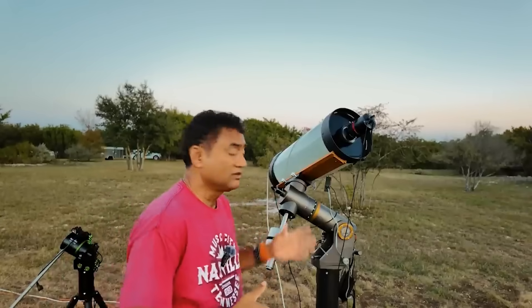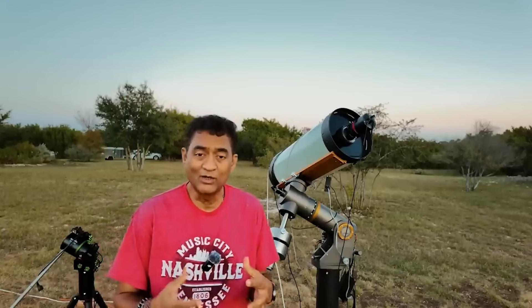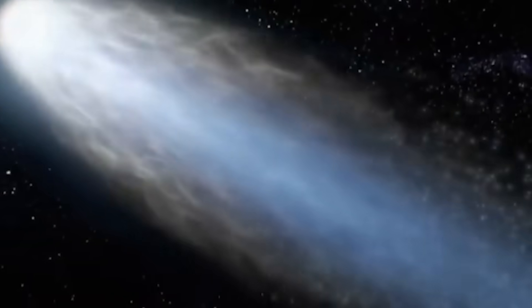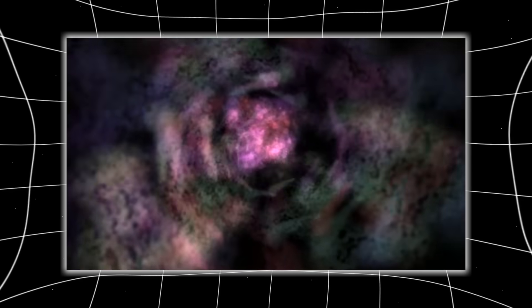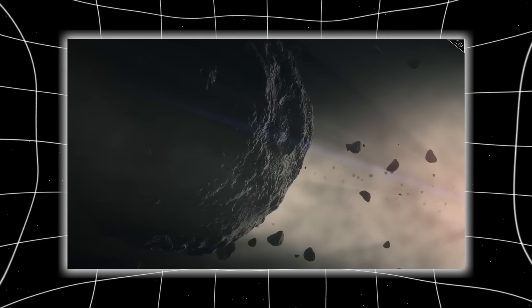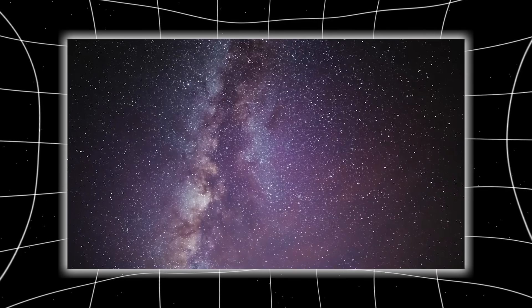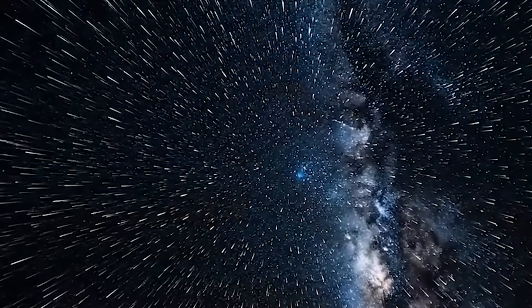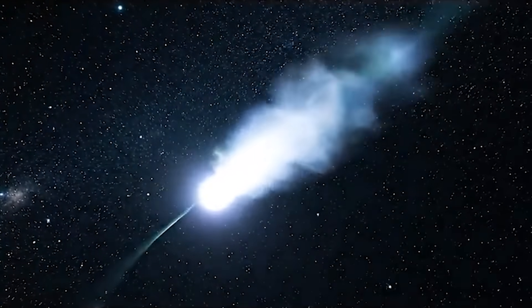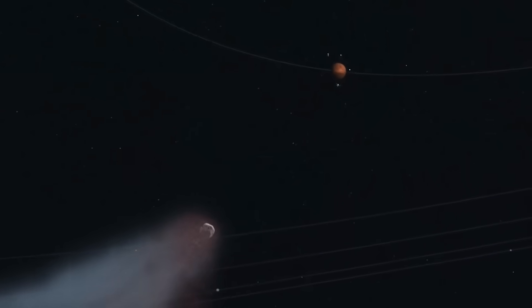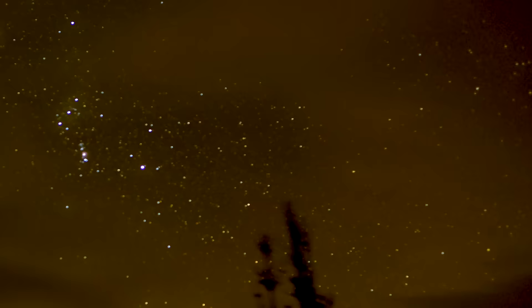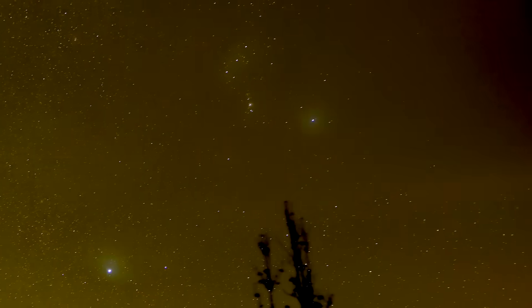As Ray continues capturing the comet night after night, something subtle yet profound begins to emerge in his data, because the closer 3i Atlas gets to Earth, the more pronounced its internal structure becomes through the glow of its coma, almost as if the comet were gradually peeling back its own layers for us to study. Ray mentions that what initially looked like a diffuse, uniform blur is now showing distinct geometry, with the pointed central region growing sharper and more defined with each observation. This isn't because Ray's equipment is changing, but because the comet's own activity is increasing, ejecting material in ways that emphasize its underlying shape.